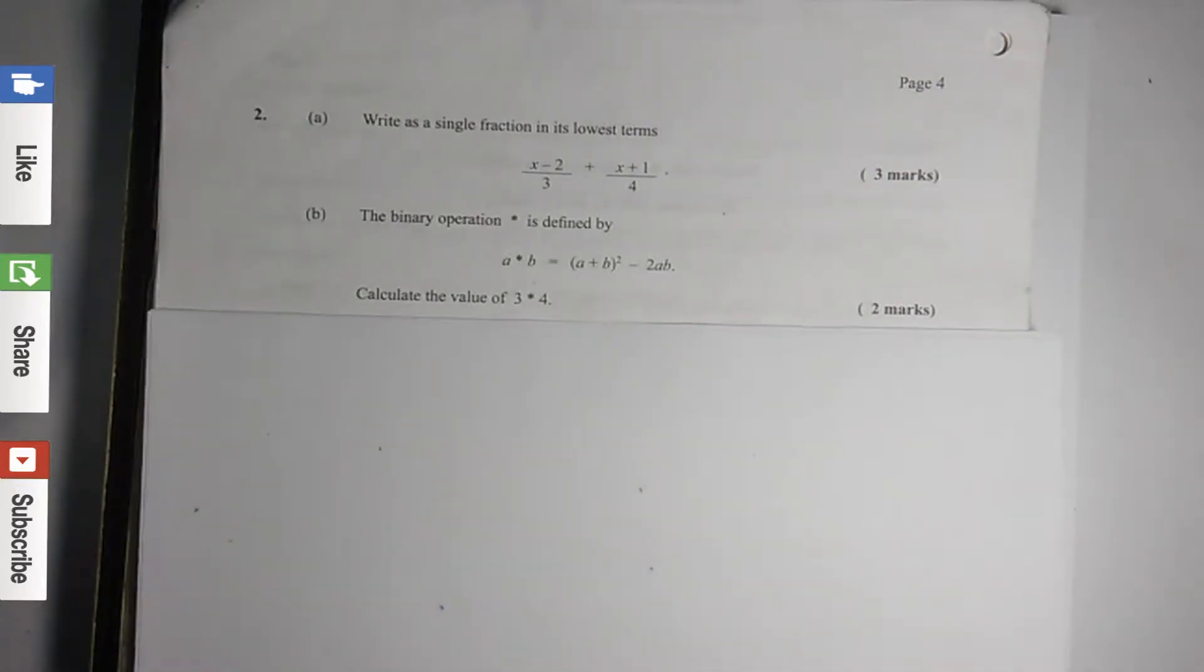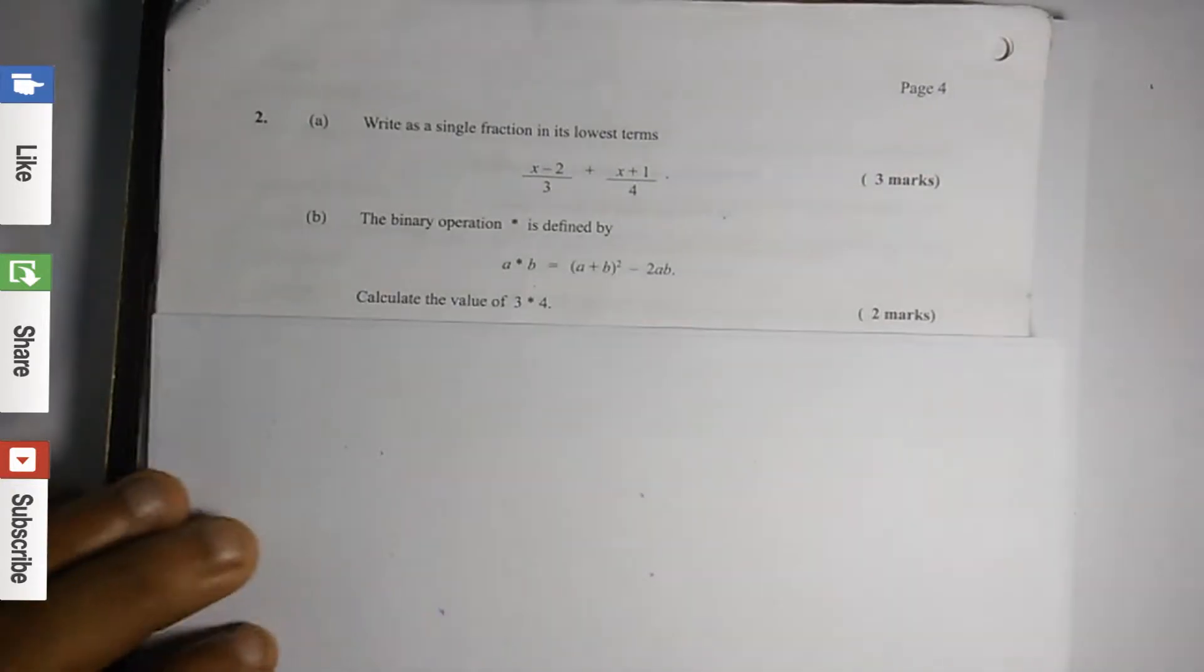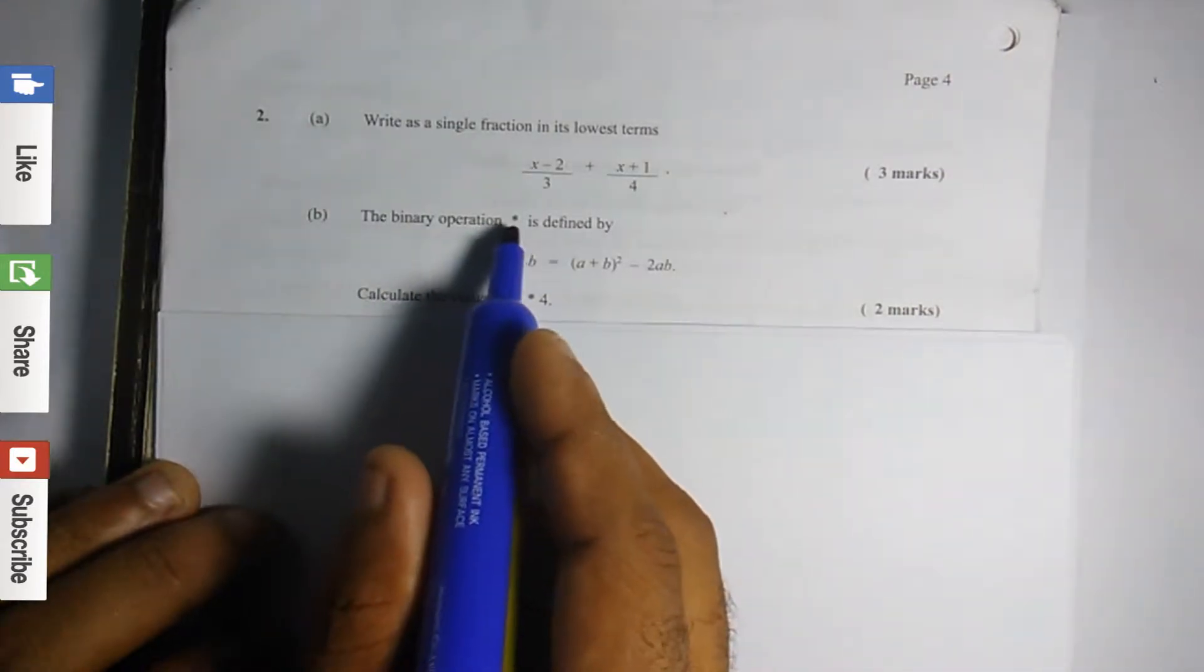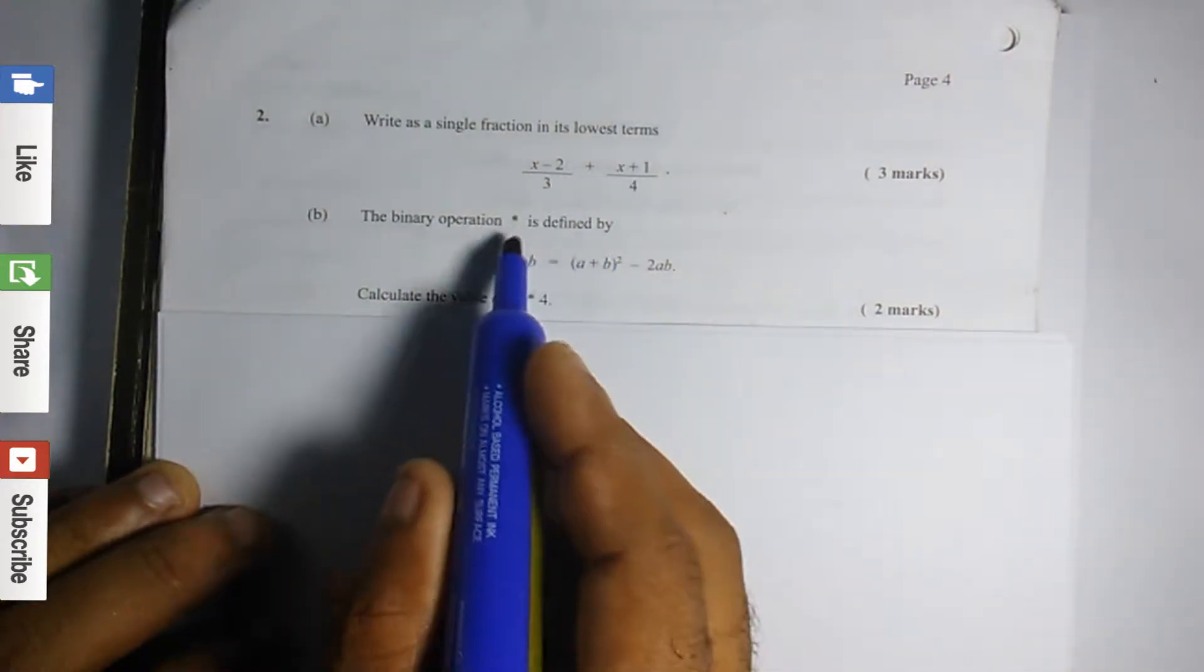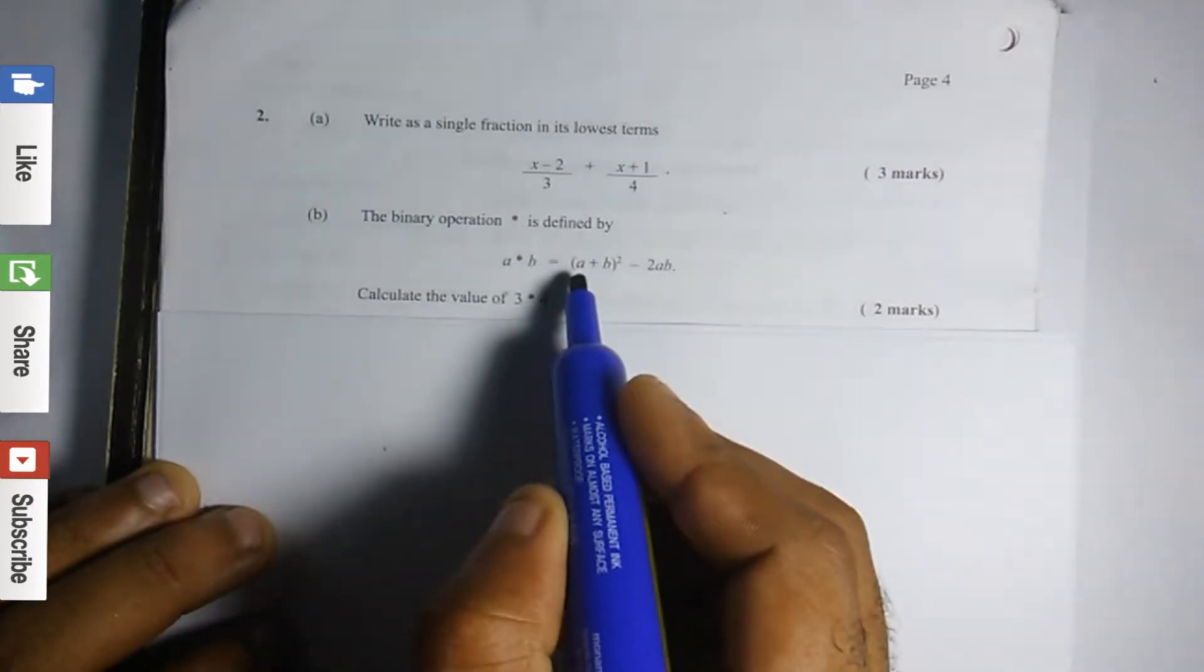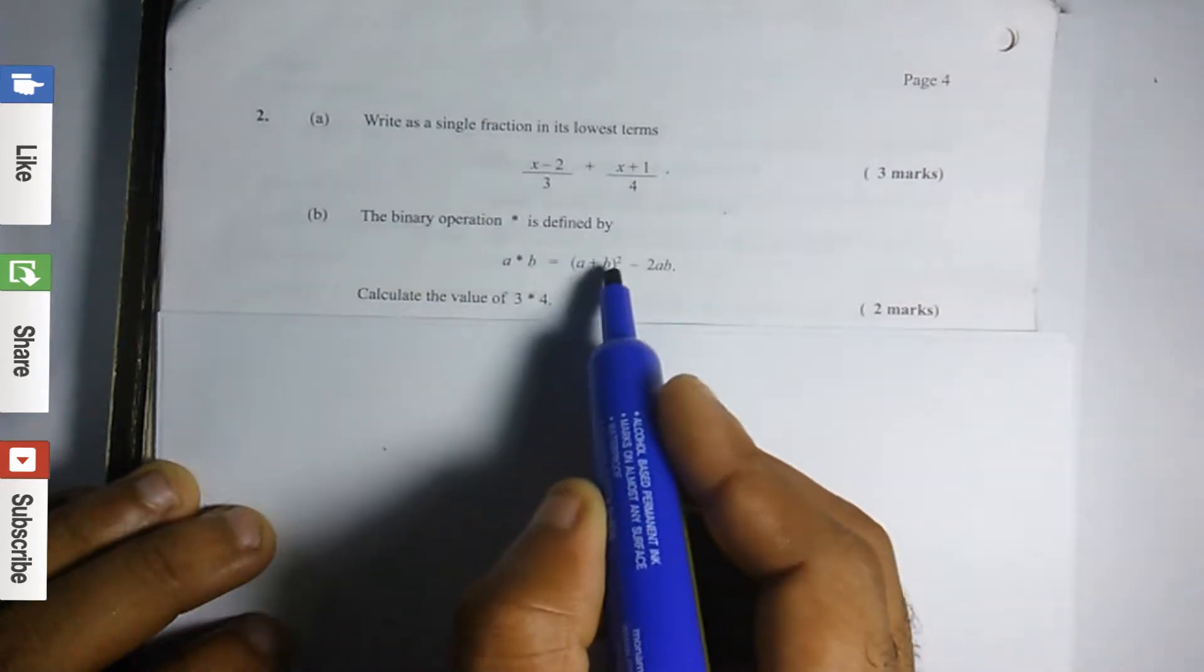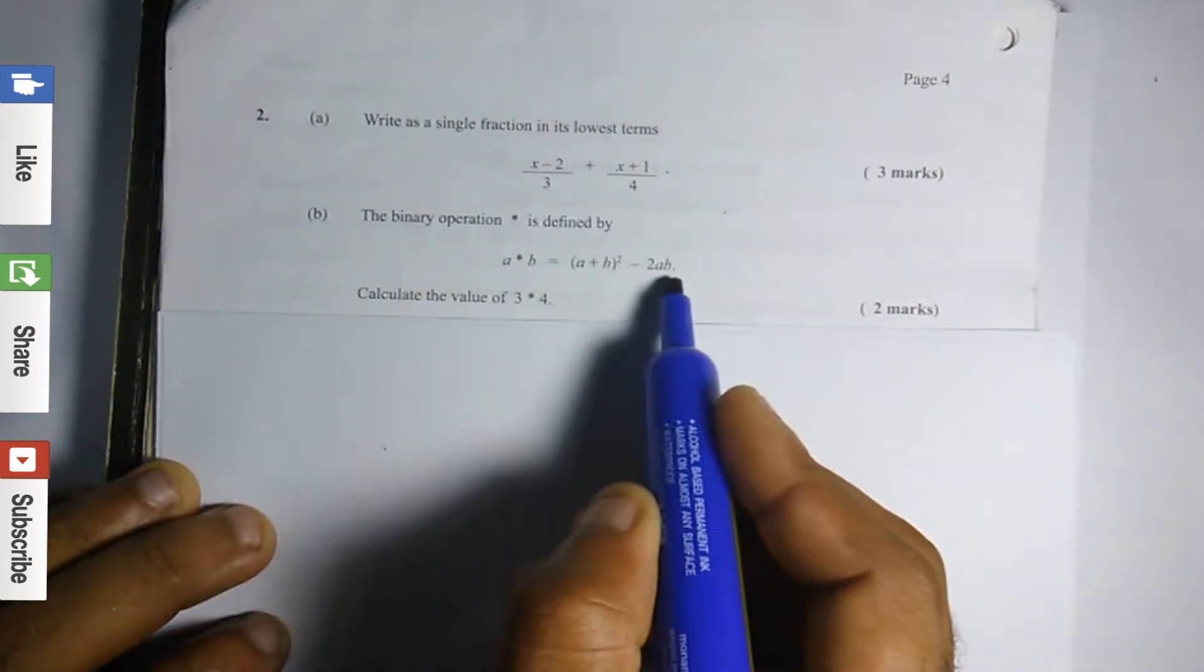In this video, we'll be looking at binary operation. So we have a question here. The binary operation star is defined by a star b equals a plus b squared minus 2ab.